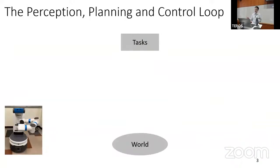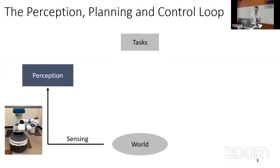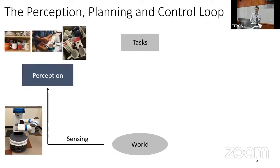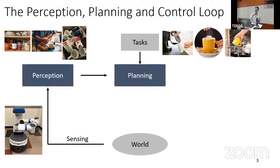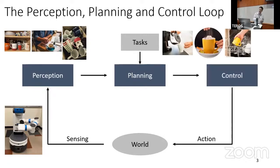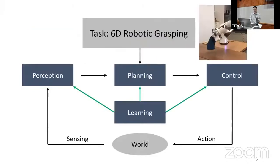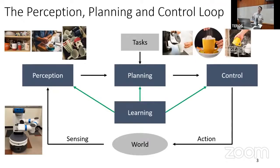To tackle these challenges, I believe the perception-plan-control loop is critical. The robot needs to perceive and understand what's going on in the real world — recognizing all the different mugs — then use that information for planning, where the plan depends on the task. After that, the robot applies control to execute the generated plan, and this action changes the world. The robot should consistently perceive, plan, and act in a closed loop. Learning is also playing a very important role here — robots need to learn various skills in perception, planning, and even control.